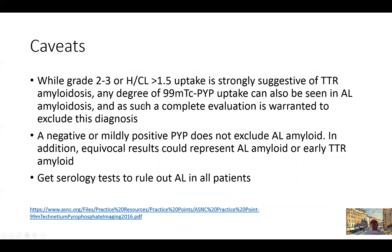Some important caveats before concluding: Grade 2-3 uptake is suggestive of TTR amyloidosis, but AL amyloidosis can also present with this level of uptake. Therefore, one should not definitively exclude AL amyloidosis. In most or all of our patients, we still recommend serologic testing for AL amyloidosis in all patients referred for non-invasive imaging — first to confirm TTR amyloidosis, and second to ensure there is no overlapping pattern. We have had instances where patients had both TTR and AL amyloidosis simultaneously.